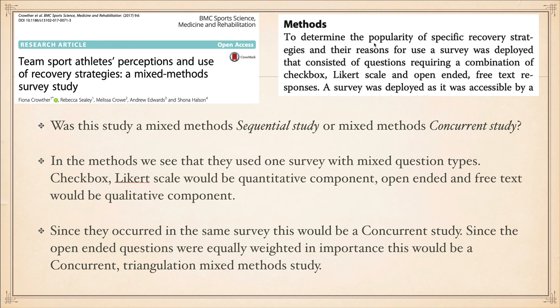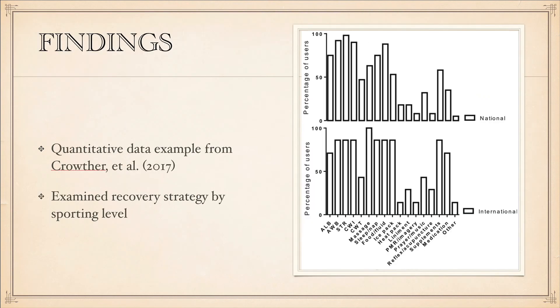That distinction is useful so you have an idea of the different ways to go about mixing these methods. Now let's look at some of the findings and discuss whether they're quantitative or qualitative. Here's an example of quantitative data from that study — because it's numbers, it's percentages, it's frequencies of use. This figure compared national athletes to international athletes and asked which recovery methods they use the most.